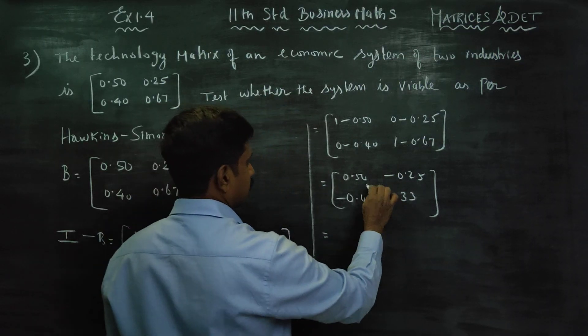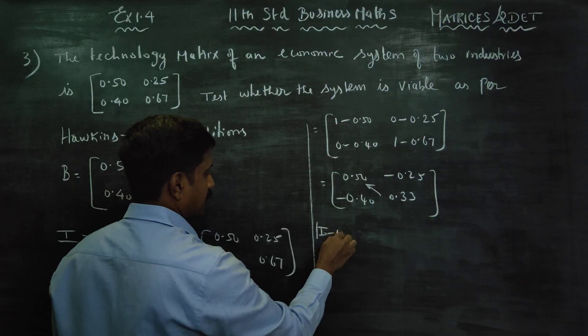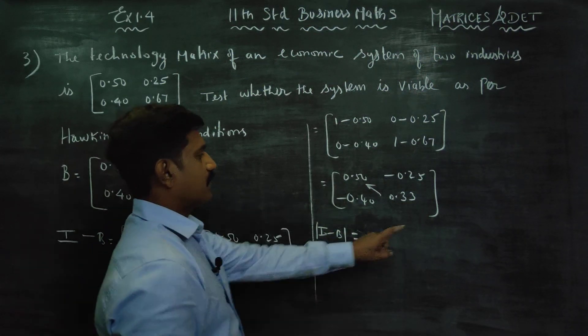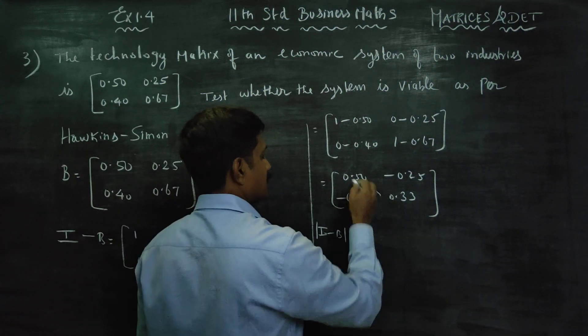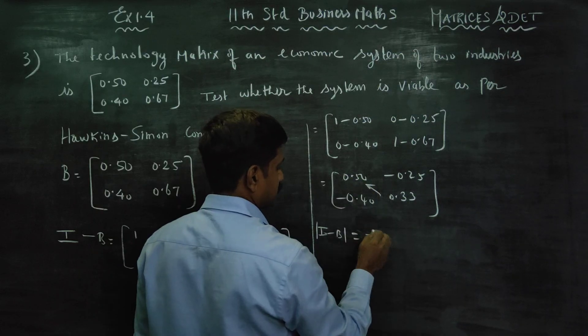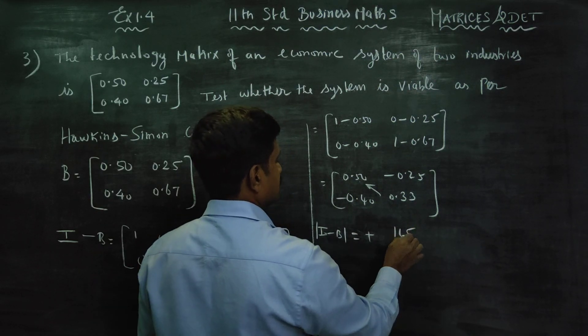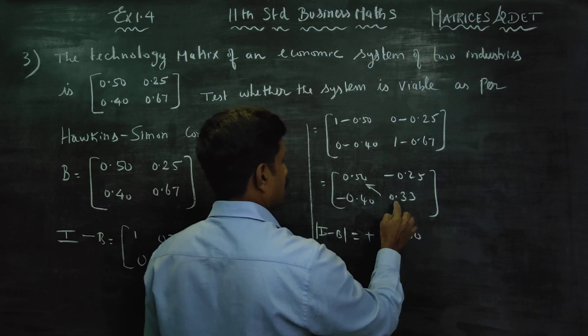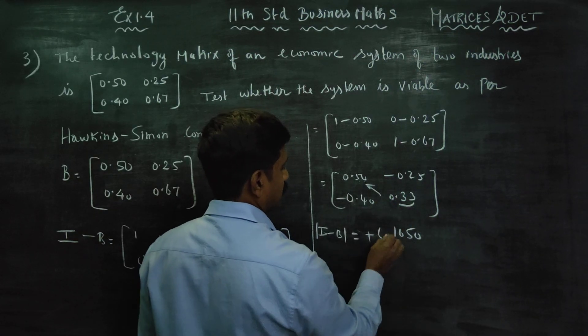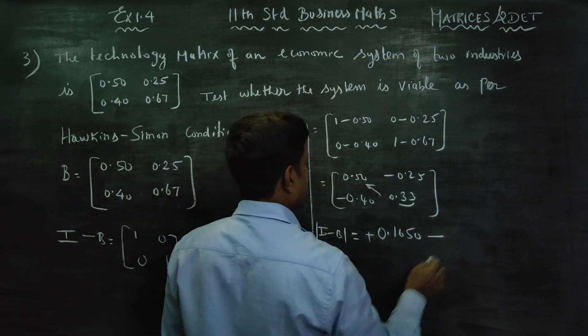Right hand side minus left hand side. Determinant of I minus B. Right hand side: plus into plus, 0.50 times 0.33 equals 0.165 minus...